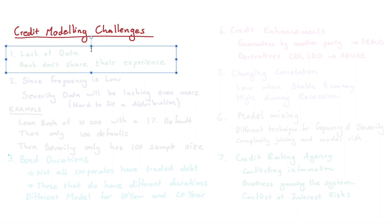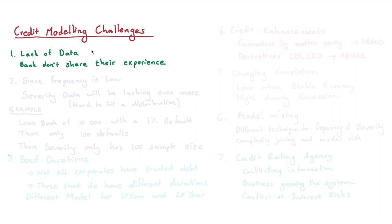The first challenge we need to talk about is the lack of data. This is different to, say, insurance. When it comes to life insurance, how many people die every year is knowledge accessible to all — there are life tables where people can see how many people died at each age group. However, when it comes to how many people defaulted on certain loans, that information is very much seen by banks as intellectual property.